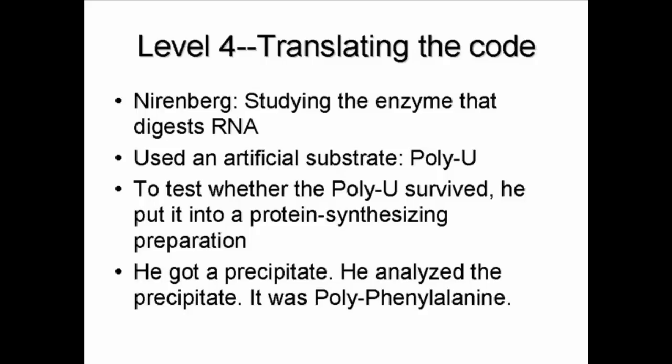Nirenberg and Matthaei were studying an enzyme that degraded RNA. They made an artificial RNA — consisting of nothing but the single base uridine, so it was poly-U — to measure what was happening. In order to tell whether it survived, they mixed it with a protein-synthesizing solution to see if it could still synthesize protein. When they did that, however, they ended up getting a precipitate, which turned out to be polyphenylalanine — insoluble because the amino acid phenylalanine is insoluble, and therefore a polymer of it is too.